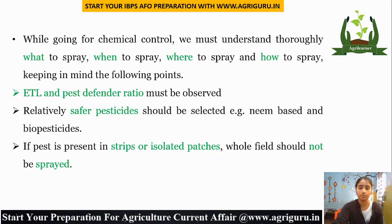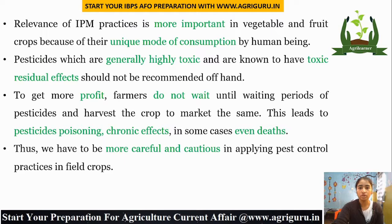Relatively safer pesticides should be selected, such as neem-based and biopesticides. If pests are present in strips or isolated patches, the whole field should not be sprayed. IPM practices are especially important in vegetable and fruit crops because of their direct consumption by human beings. Highly toxic pesticides with residual effects should not be recommended off-hand. Farmers sometimes harvest crops before the waiting period of pesticides to market them, leading to pesticide poisoning, chronic effects, and sometimes death. Thus, we must be careful and cautious in applying pest control practices.